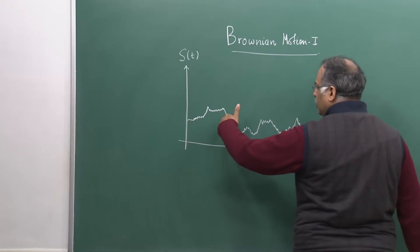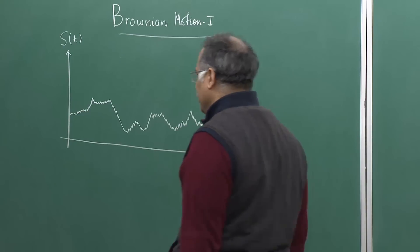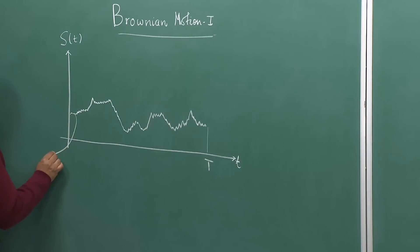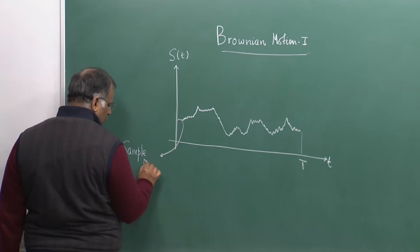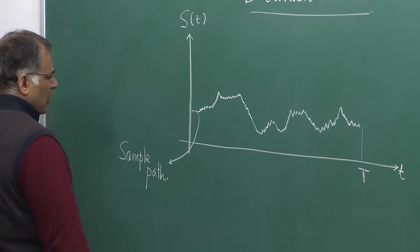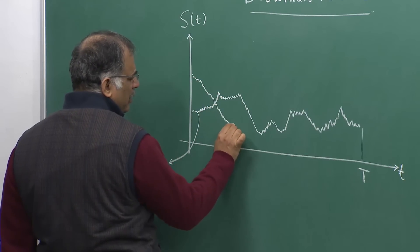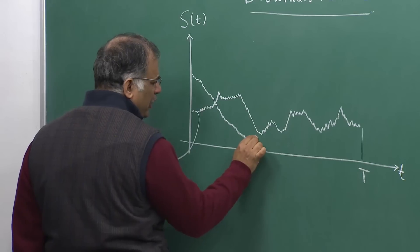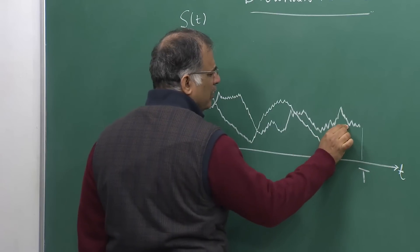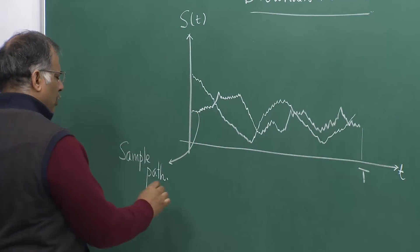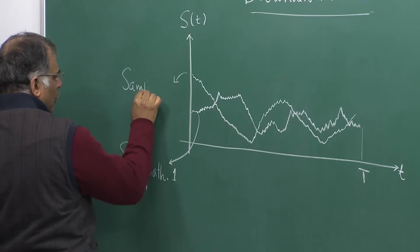If a particular scenario involves a particular path, this is called a sample path. If another scenario evolves, there would be another path. For example, the stock price could be going down, down, down and you are in a bad shape, and then it again climbs up and again falls down, and again climbs up. So under a different scenario it has a different path — sample path 1, sample path 2. It depends on what type of scenario evolves.